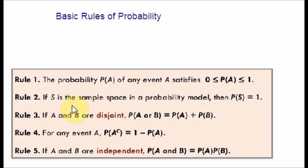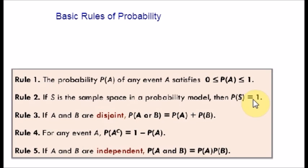Probability Rule 2: if S is a sample space in the probability model, then the probability of S equals 1. This tells us that the sum of the probabilities of all possible outcomes must equal 1. Looking at the blood type table I showed, if you add all the probabilities it should equal 1 — that is the second rule. I used this concept by subtracting 0.58 from 1 to find the missing probability.